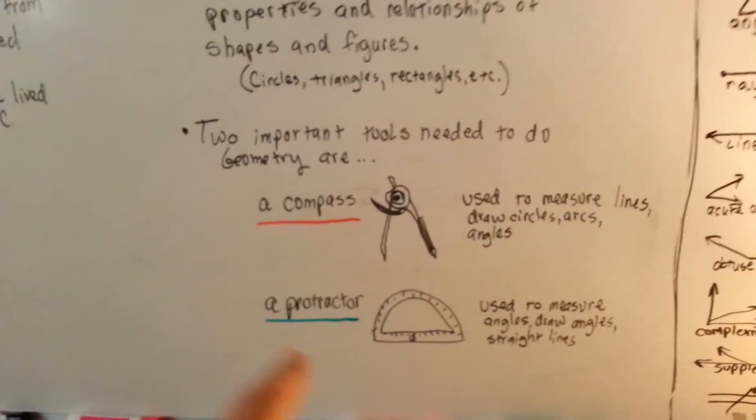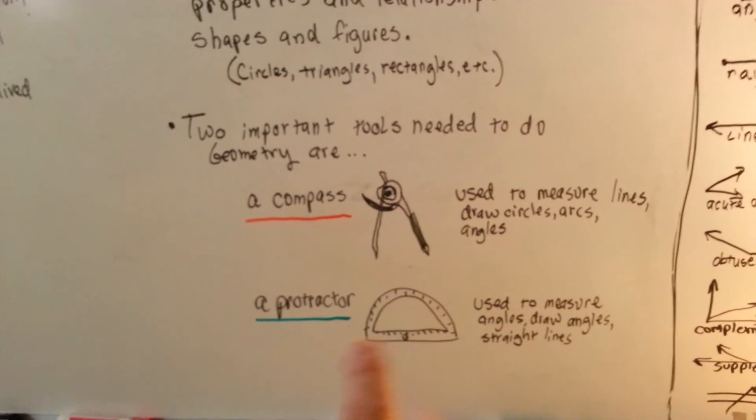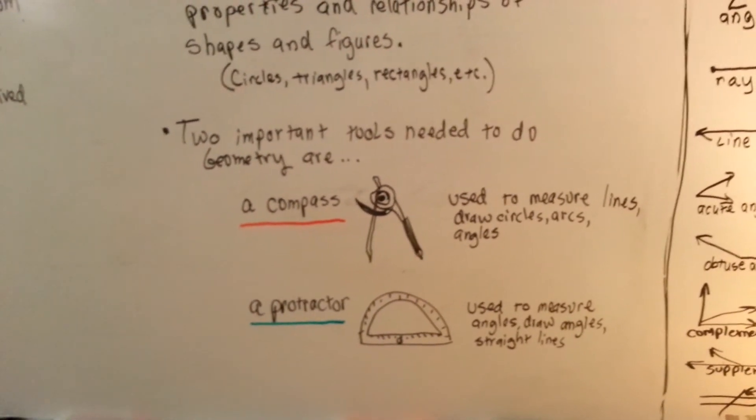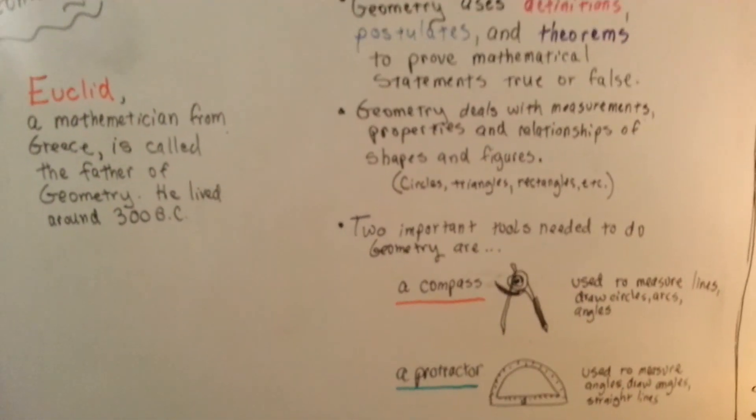You're also going to need a protractor. I prefer the clear ones so you can see through it to the angles you're doing. It's used to measure angles, draw angles, and straight lines. So that's what geometry is.